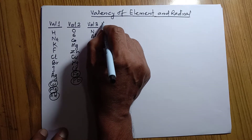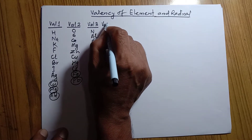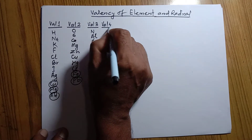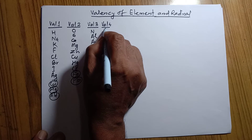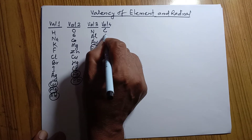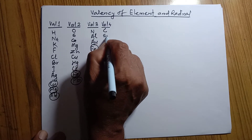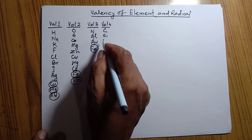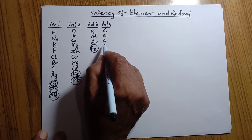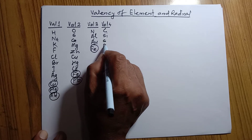In the same way, there are some elements having valency 4 also. They are commonly carbon, silicon, and others such as sulfur and lead also.